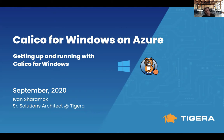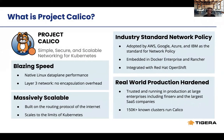My name is Ivan Sharomok, I'm a solutions architect at Tigera. I want to start by briefly going through what Project Calico is for people just starting their journey with Kubernetes and networking solutions. Project Calico is an open source networking and network policy enforcement solution for Kubernetes. It also works in OpenStack and beyond, but Kubernetes is the main domain right now — a pretty vibrant community with lots of changes happening there.